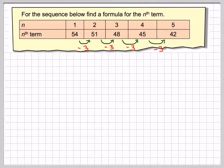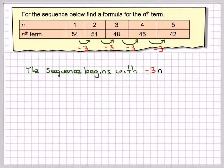So the nth term will begin with minus 3n. Now, to find what we need to add on to that, we go back one, so we're adding a 3 to the 0 term. If we add 3 to 54, we get 57, so we need to add on 57.